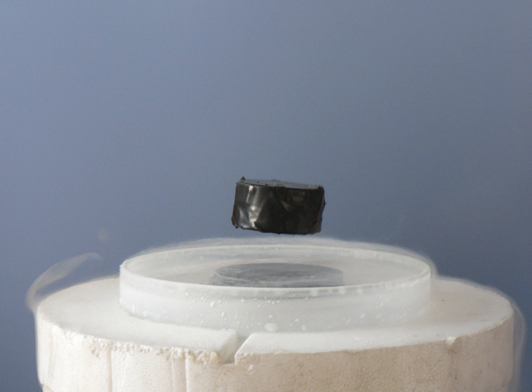At 4.2 Kelvin, a compound consisting of three parts niobium and one part tin, was capable of supporting a current density of more than 100,000 amperes per square centimeter in a magnetic field of 8.8 Tesla. Despite being brittle and difficult to fabricate, niobium-tin has since proved extremely useful in supermagnets generating magnetic fields as high as 20 Tesla.